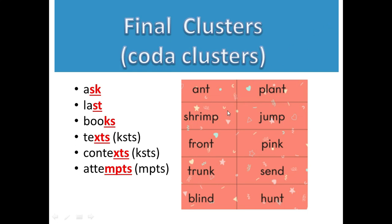Here are more final cluster examples: 'ant', where the consonant cluster is N and T at the end. Other examples: shrimp, front, trunk, blank, blind, plant, jump, pink, scent, hunt. These are all examples of final cluster sounds, where two or more consonants appear at the end of the word.